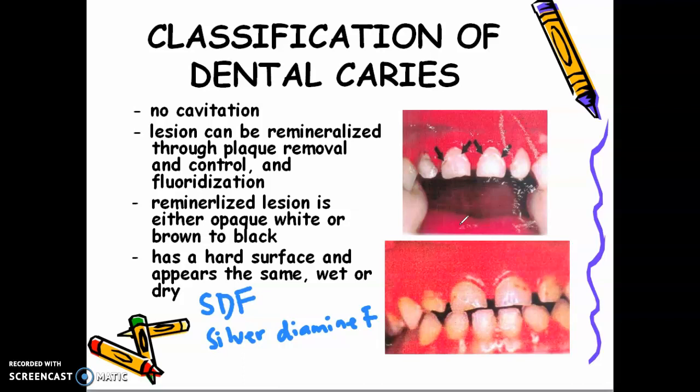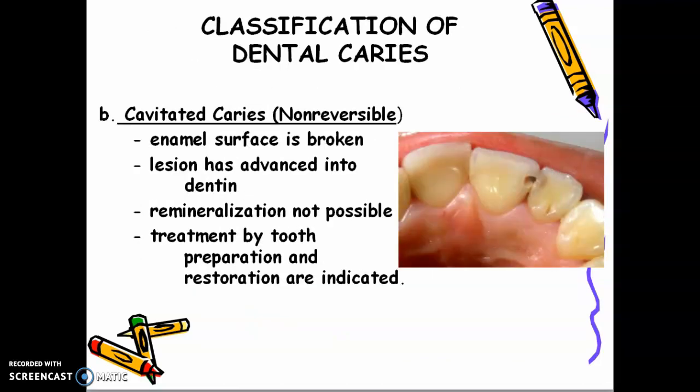The disadvantage of SDF is that all the brown spots look black. So you have to explain this well to the parents before you do any procedure, especially for minor patients. Next, cavitated caries: the enamel surface is broken and the lesion has advanced into the dentine. Remineralization is not possible, and treatment by tooth preparation and restoration is indicated.